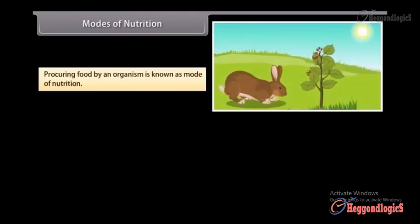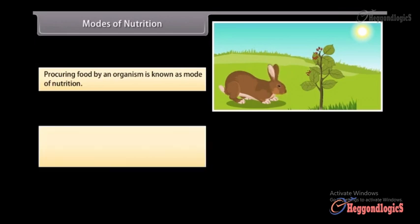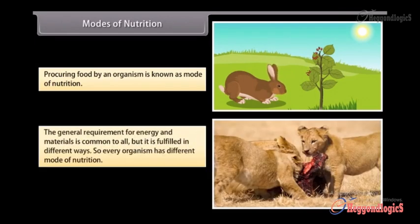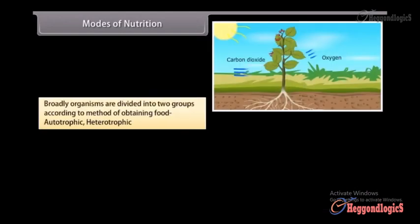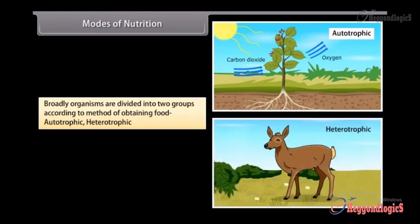Modes of nutrition. Procuring food by an organism is known as mode of nutrition. The general requirement for energy and materials is common to all, but it is fulfilled in different ways. So every organism has a different mode of nutrition. Broadly, organisms are divided into two groups according to method of obtaining food: autotrophic and heterotrophic.